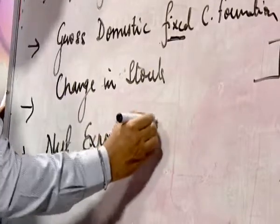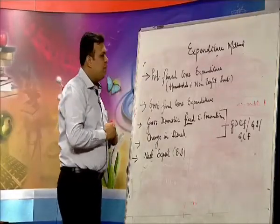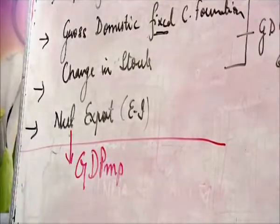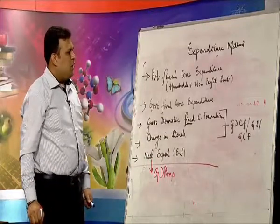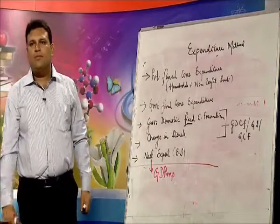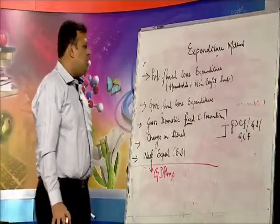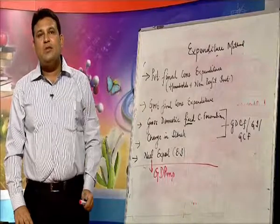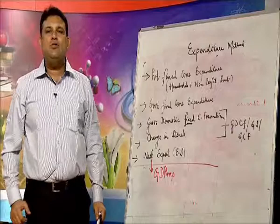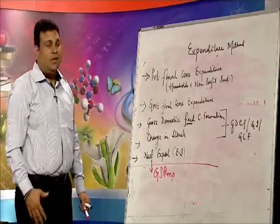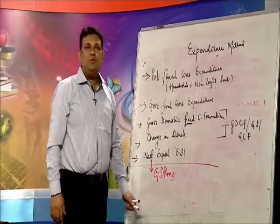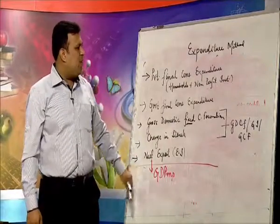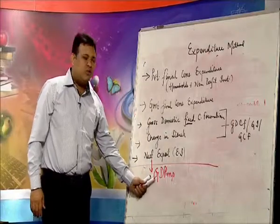At the last we have net exports — exports minus imports. If we add all these components, we get the value of GDP at MP. For example, households consume milk, purchase bread, pay school fee and tuition fee. Government purchases raw material and various goods and services for running government departments. If capital formation is fixed, take change in stock separately. This is how we reach GDP at MP.